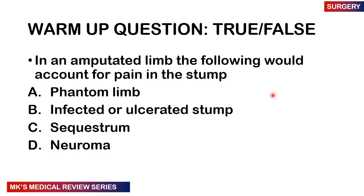Here's our warm-up question, which is a true or false. In an amputated limb, the following would account for pain in the stump: A. Phantom limb. B. Infected or ulcerated stump. C. Sequestrum. D. Neuroma. You may pause the video, write down your answers, and let's go.